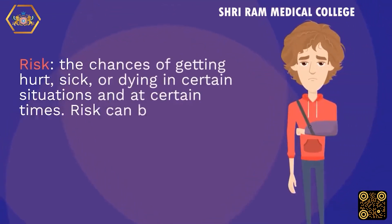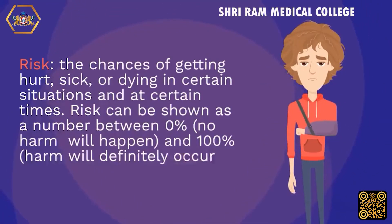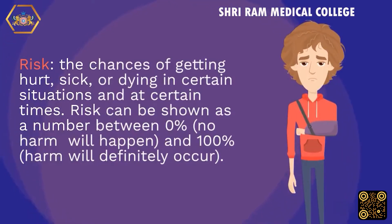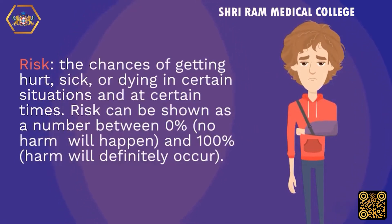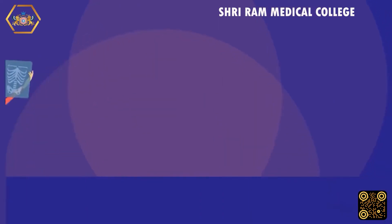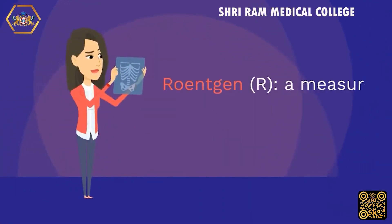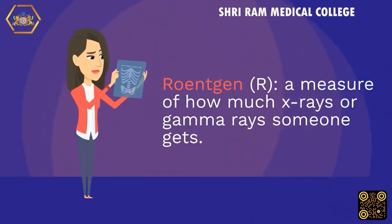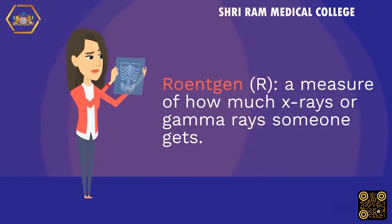Risk: the chances of getting hurt, sick, or dying in certain situations and at certain times. Risk can be shown as a number between 0% (no harm will happen) and 100% (harm will definitely occur). R: a measure of how much X-rays or gamma rays someone gets.